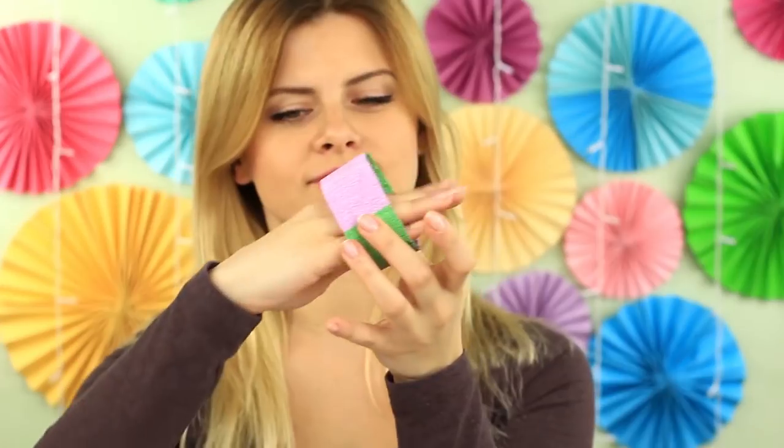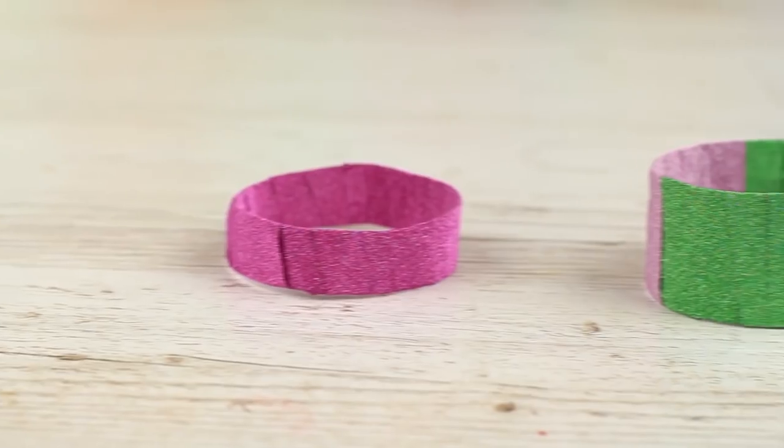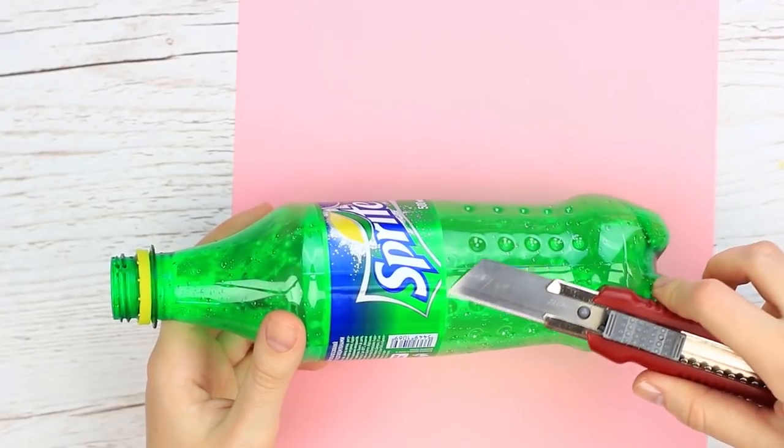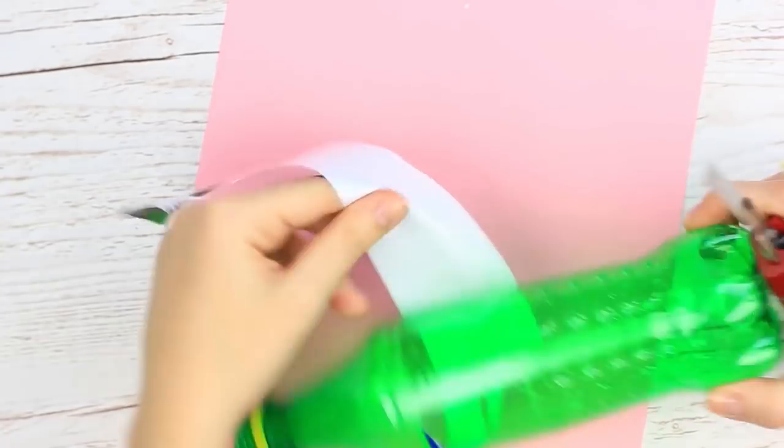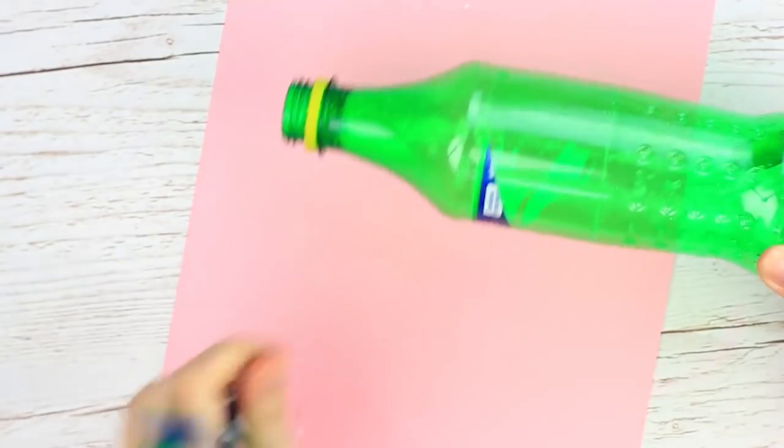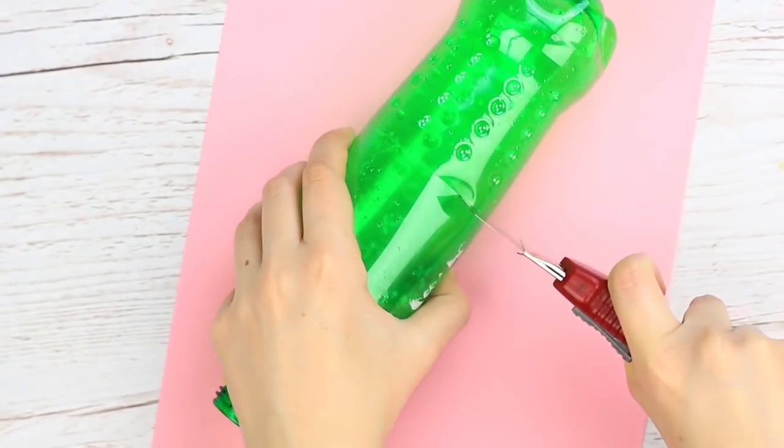Let's make new bracelets to complete the low-cost jewelry collection. We'll need a bottle of a width to fit the hand. It should be neither too narrow nor too wide. Remove the label using the craft knife. Cut it in half.